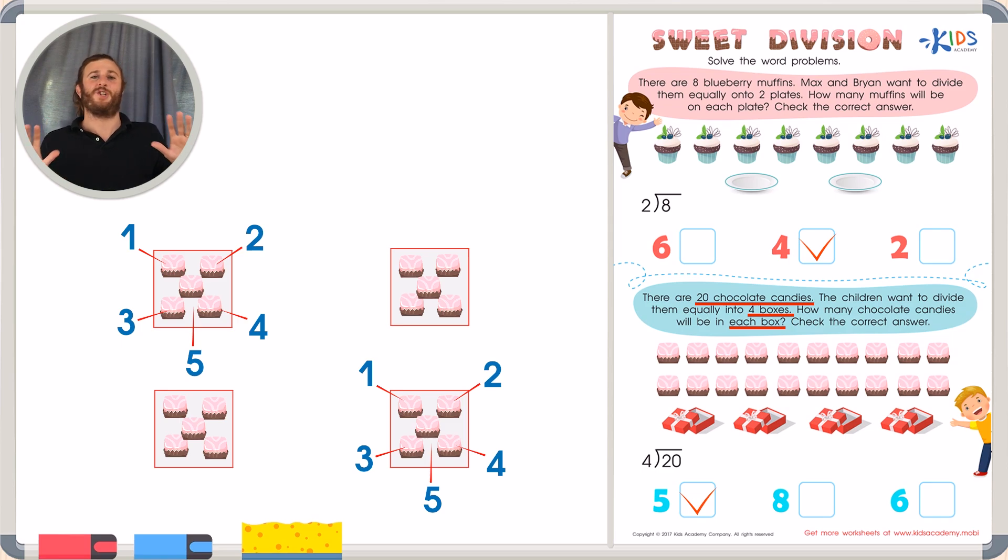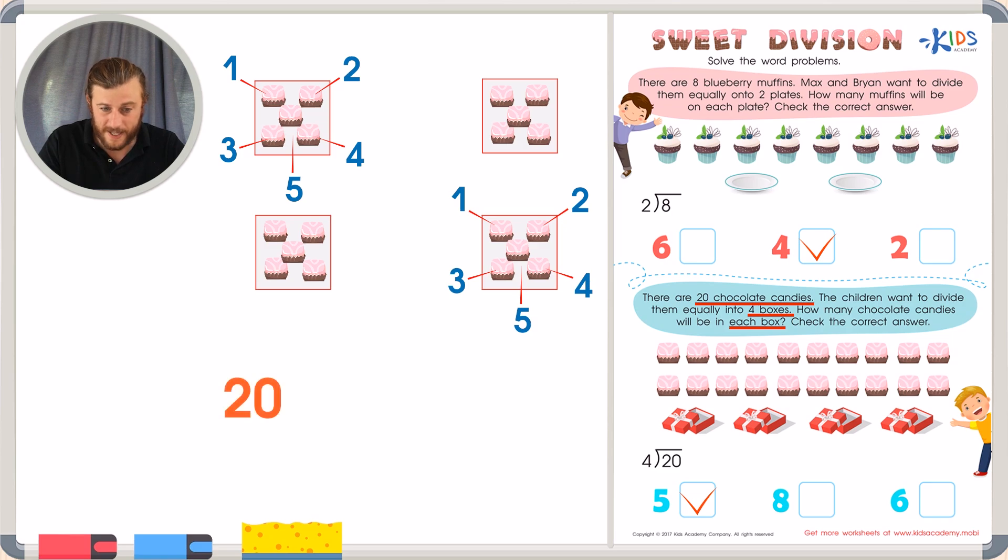But just to be really sure, let's check our work with skip counting again. We'll write out the problem. Twenty divided by four. And just like last time, we'll skip count by our lower number four to our higher number twenty to see how many fours there really are inside of twenty. Let's skip count. Four, eight, twelve, sixteen, and twenty. That's one, two, three, four, and five. Twenty divided by four equals five. And that matches up with my picture drawing. I'm pretty sure my answer is five. Twenty divided by four equals five.